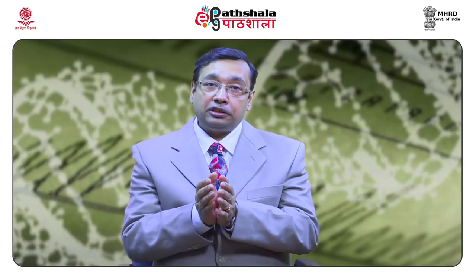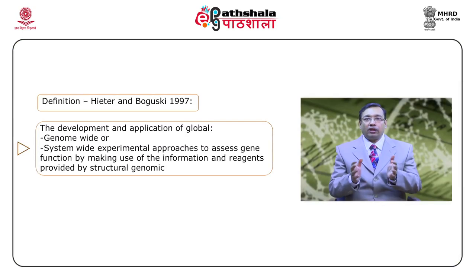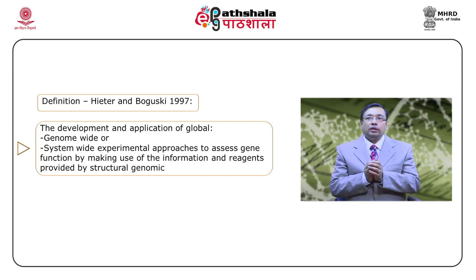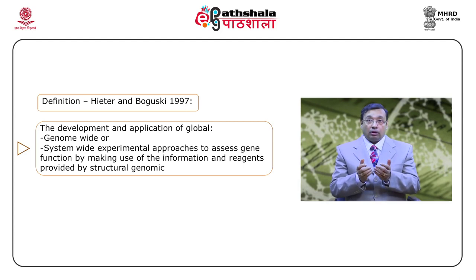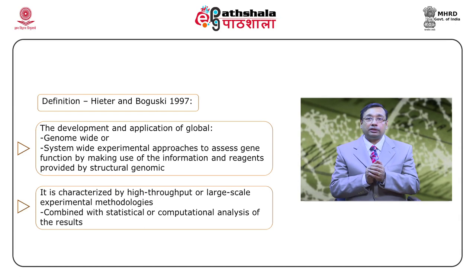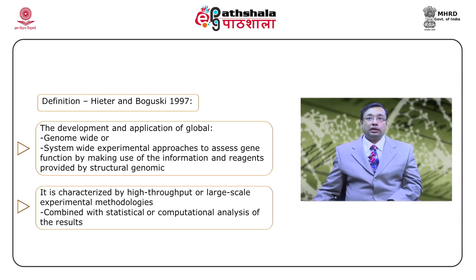So now you can understand the efficacy of functional genomics. Basically, the development and application of functional genomics at the genome-wide level involves system-wide experiments where approaches access gene function by making use of information and different reagents. Reagents could be antagonists, agonists, or any kind of compounds. This information is drawn from the structural genomics part. It also goes toward high-throughput or large-scale experimental methodology.